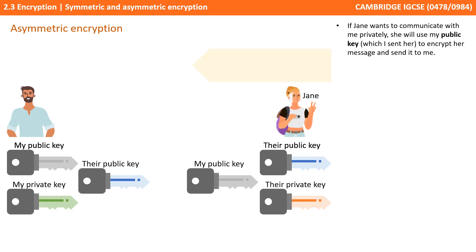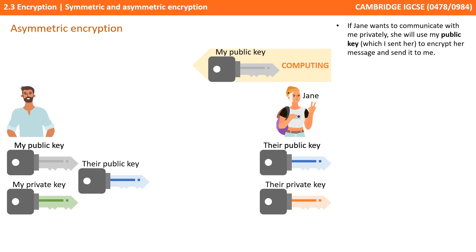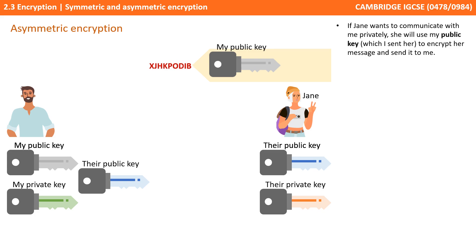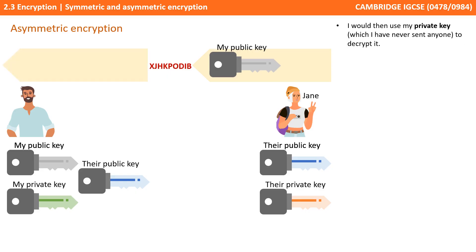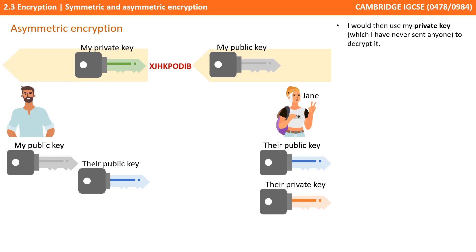If Jane wants to communicate with me privately, she will use my public key, which I sent her, to encrypt her message and send it on to me. I would then use my private key, which I've never sent anyone, to decrypt it. Note how I didn't need to share anything with Jane. I didn't need to worry about someone else intercepting the message — they can't decrypt it without my private key, which I've been keeping safe at my end and never sending out.